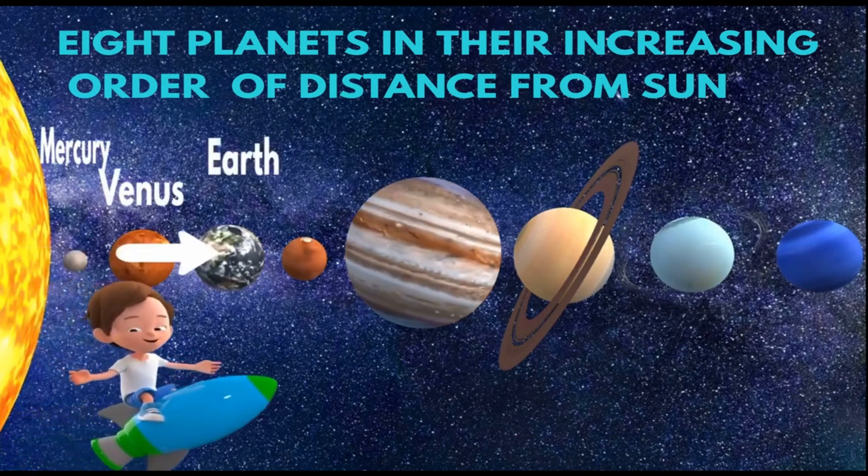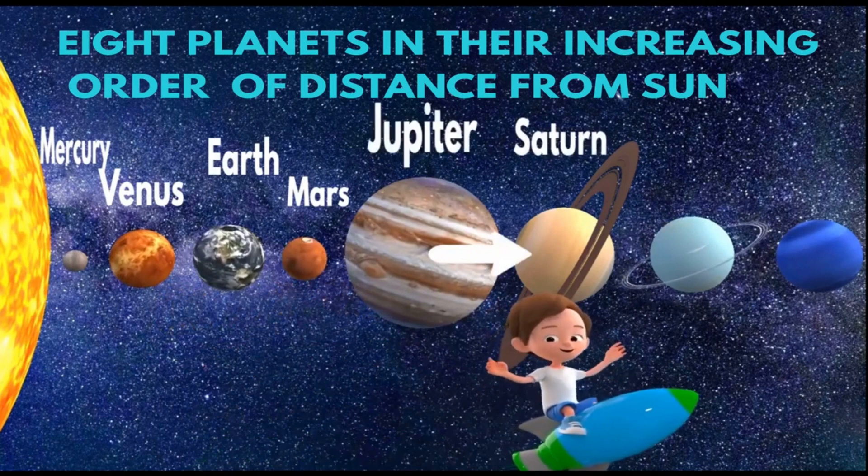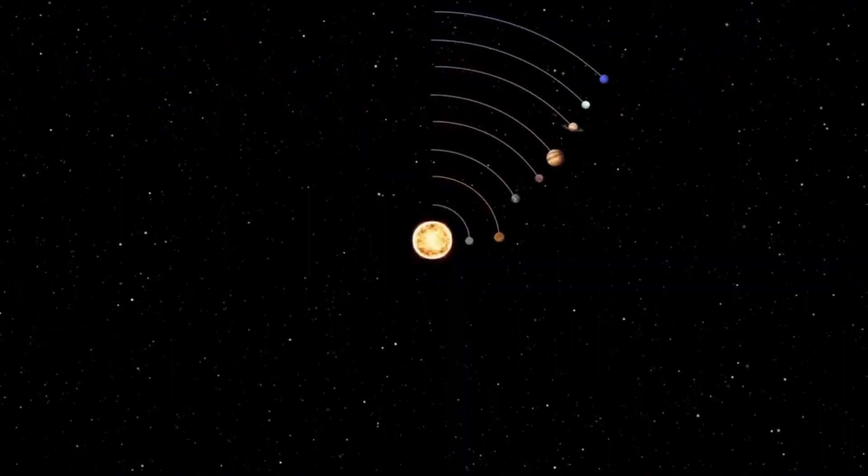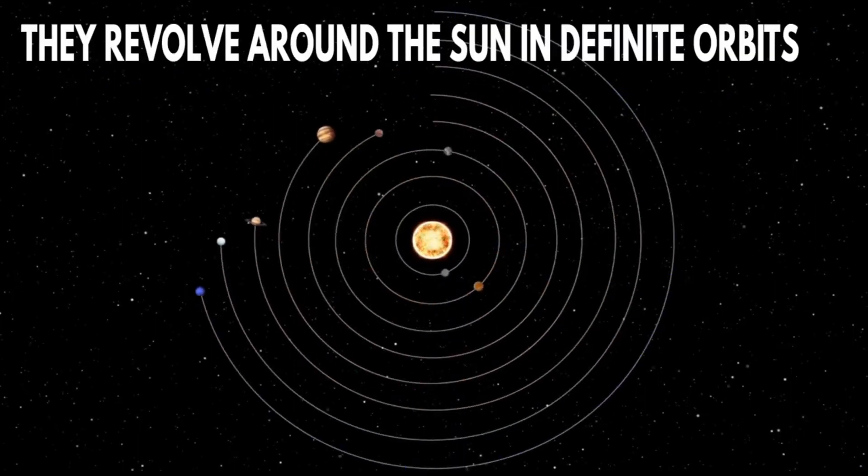Venus, Earth, Mars, Jupiter, Saturn, Uranus, and Neptune. They revolve around the sun in definite orbits.